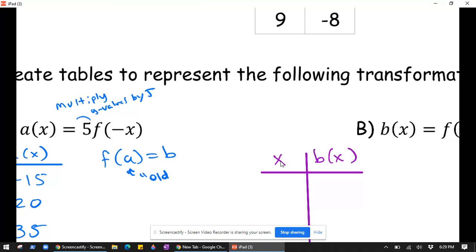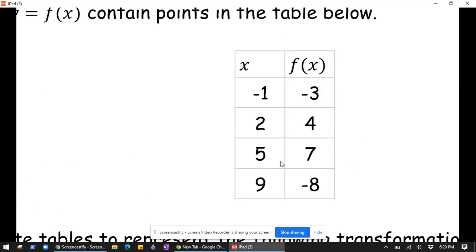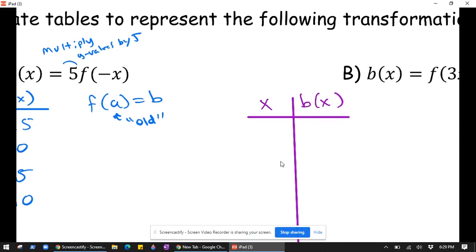Okay, so you think of a as your old x values, meaning the ones up here in the table. What we want is f of negative x to also equal b, but that'll only happen if a equals negative x.